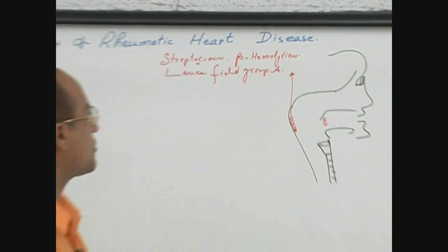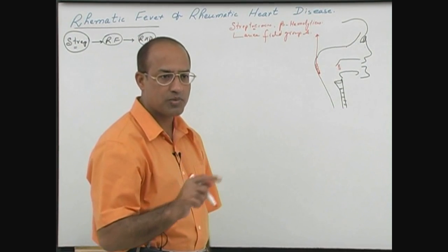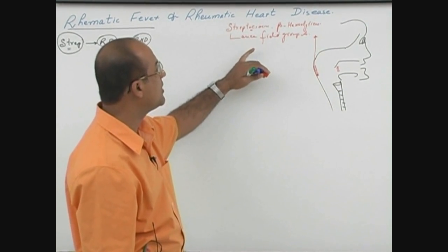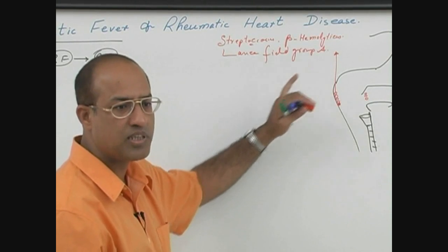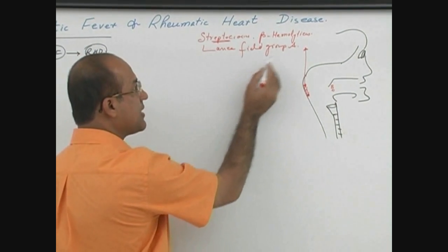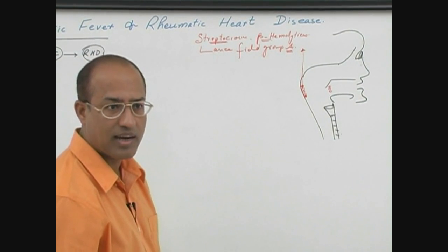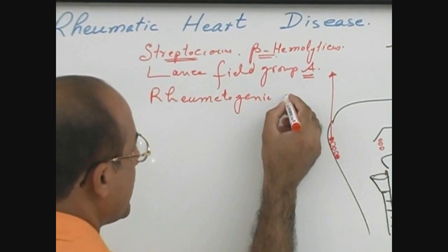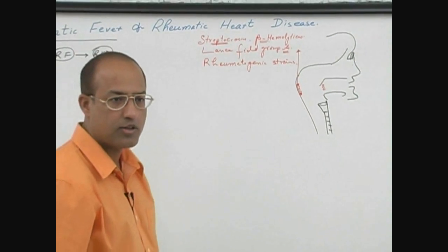Rebecca Lancefield was a lady who subclassified the beta hemolytic streptococci according to special types of cell wall carbohydrates. She classified the bacteria into Lancefield groups A, B, C, D, and so forth. This particular bacteria must be streptococcus, beta hemolytic, belonging to Lancefield group A, and it must also be a rheumatogenic strain — special strains of group A that can specifically produce rheumatic fever.